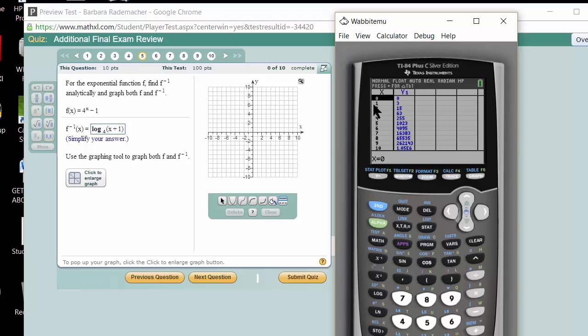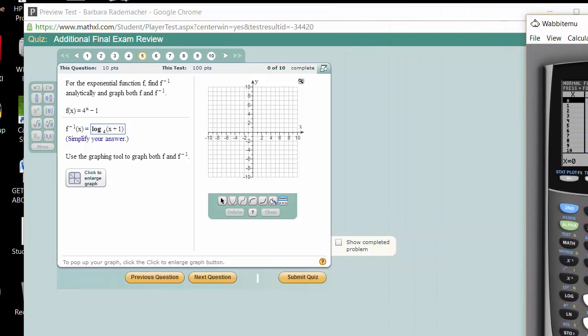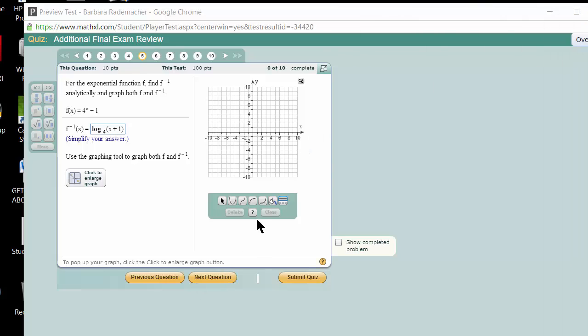How about, well, I could pick any one of them, but since this goes through 0, 0, I can't imagine a graph easier. Now, I come over here, and I choose the exponential graph, which is right here. And, as it so happens, my graph goes through 0, 0.